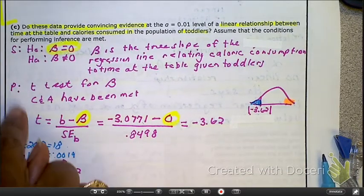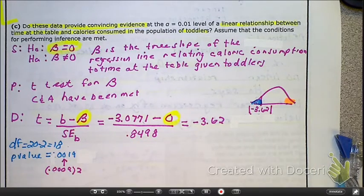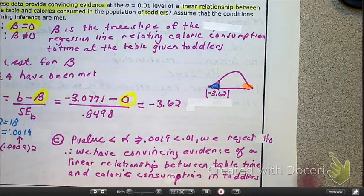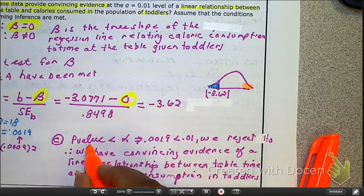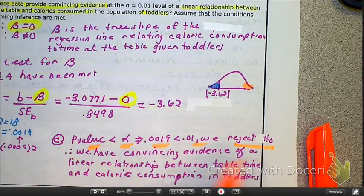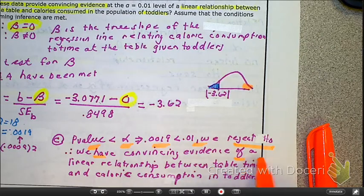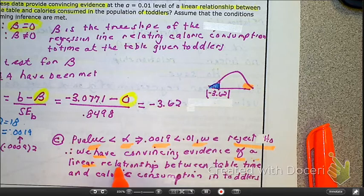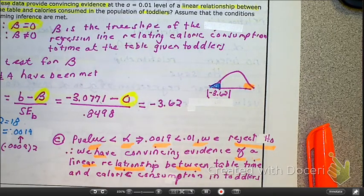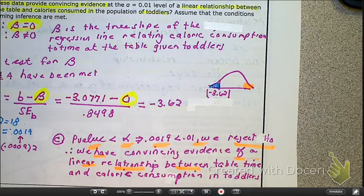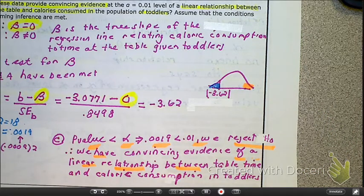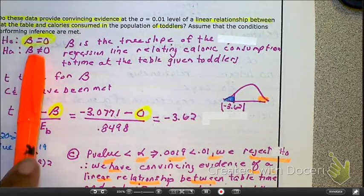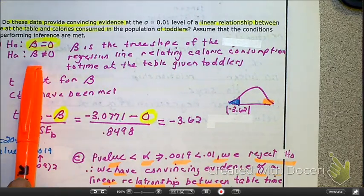We have our state, our plan, our do. Now, let's wrap this puppy up. Let's conclude. It's time for déjà vu again. Conclusion. Compare our p-value to our alpha level. We're going to reject the null hypothesis, so we have convincing evidence that there is a linear relationship between table time and caloric consumption. Because remember, your HO said that there is no relationship. Our HA is saying there is a relationship.